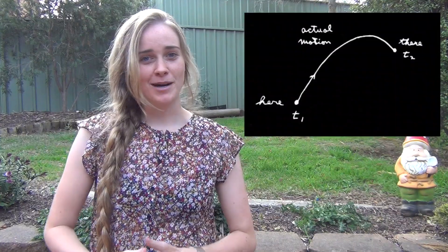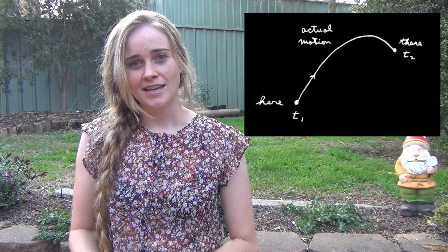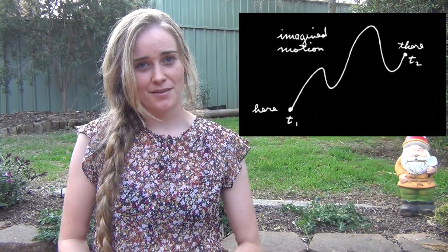An object moving freely from one point to another will take a path of least action. Imagine throwing a ball — it will go up then come down in an arc, and it will do this every time. But how does every ball know to take the same path? Why doesn't it take some wibbly wobbly imagined path? The reason is that the ball is lazy. It wants to take the path of least resistance and waste as little energy as possible.